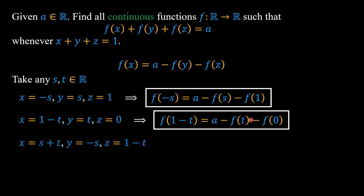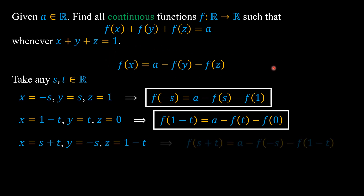And lastly, we substitute x = s + t, y = -s, and z = 1 - t into this functional equation, so we can represent f(s + t) in terms of f(-s) and f(1 - t).